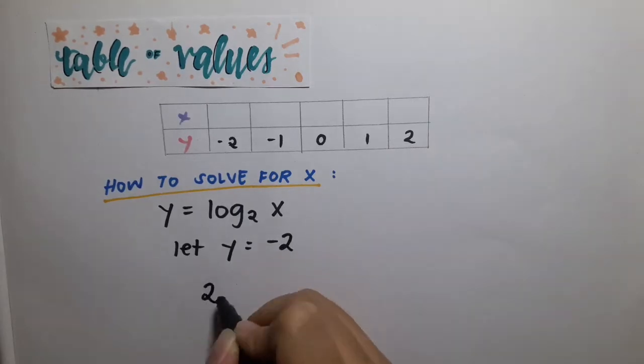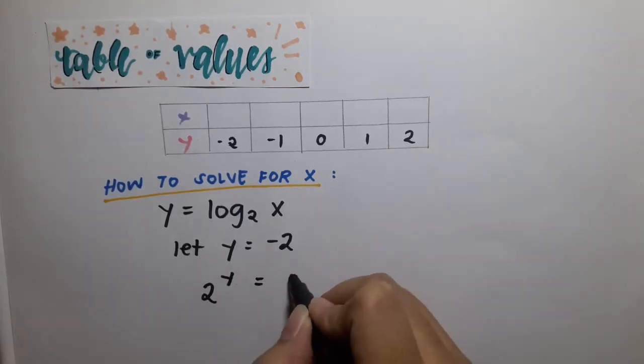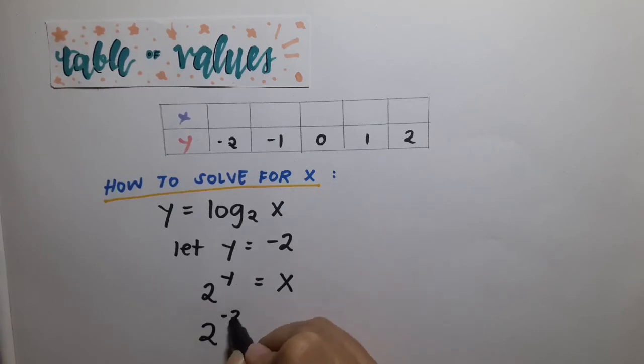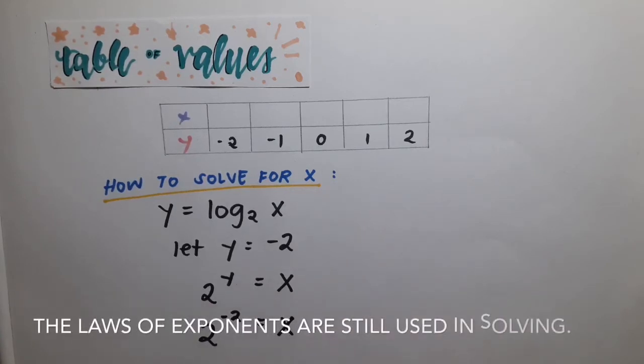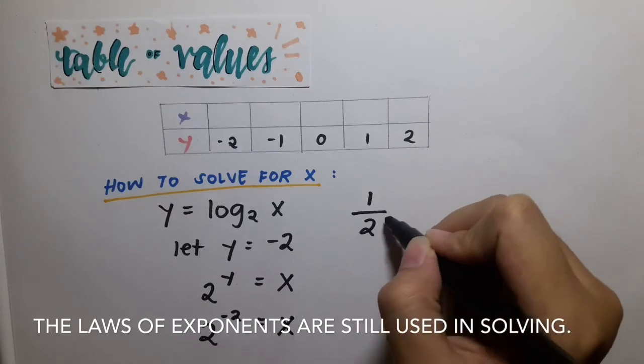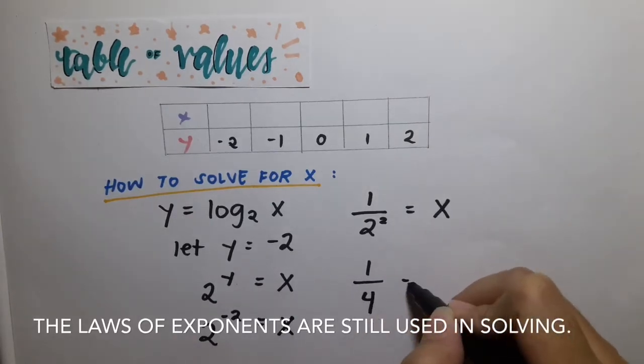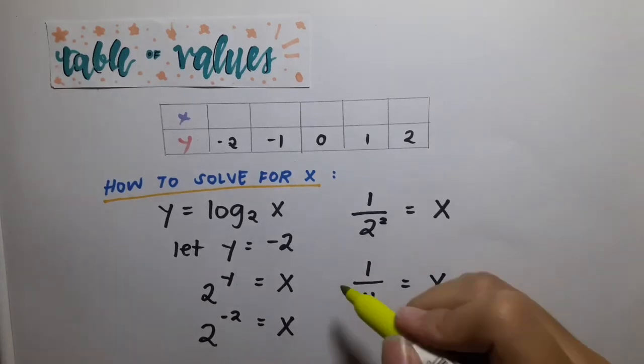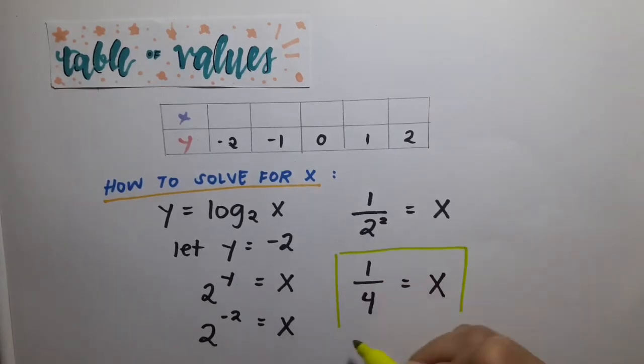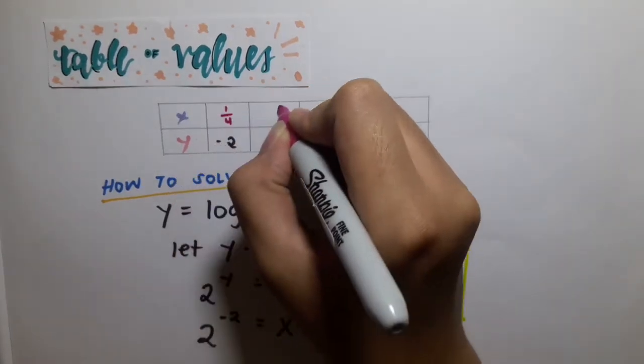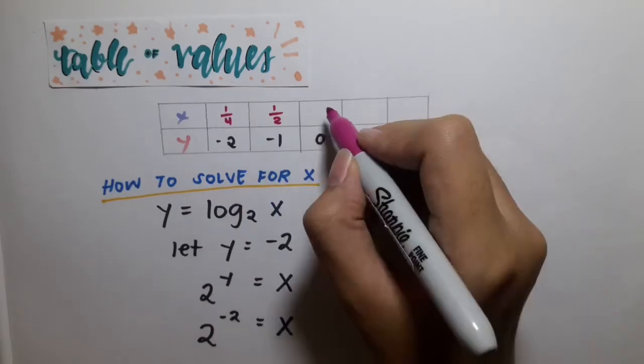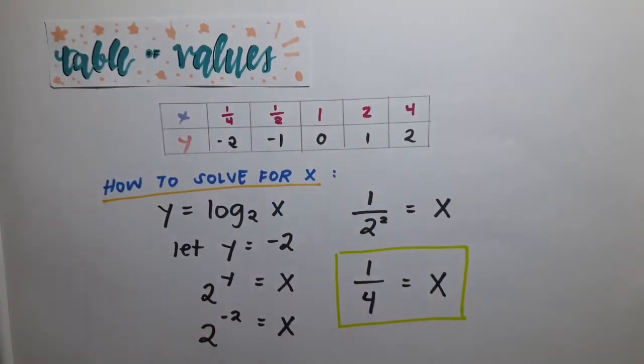So let's use negative 2. To find the value of x, simply convert the logarithmic function into exponential form, and then substitute the y value, then simplify to find the x value. So our final answer is 1/4 is equal to x, in which negative 2 is the y. Put it into the table of values, and then continue solving for the rest of the y values.